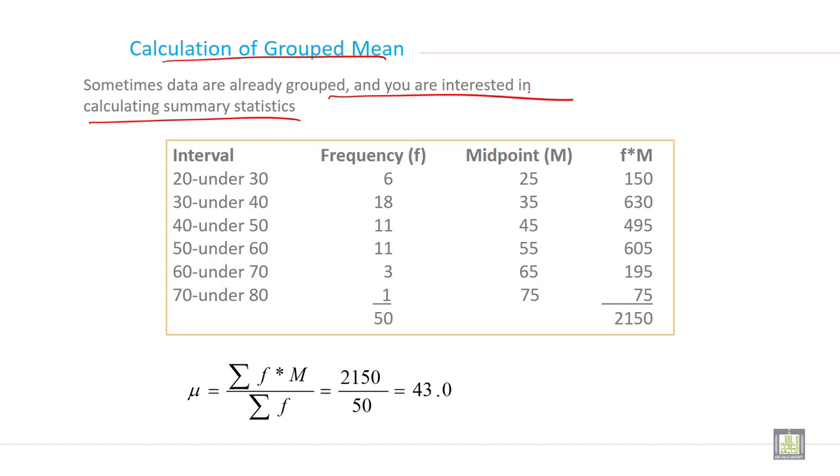Grouped data - here are two types. One is called discrete and another one is called continuous. This is discrete, this is continuous data here.